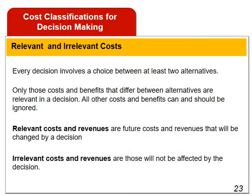Every decision involves a choice between at least two alternatives. The goal is to identify costs that are either relevant or irrelevant to the decision. Costs and benefits that differ between alternatives are relevant; all others are irrelevant and should be ignored. Relevant costs and revenues are future costs and revenues that will be changed by a decision. For example, if choosing between your own car or public transport for a journey, car tax and insurance costs are irrelevant since they remain the same either way, but petrol costs will differ and are therefore relevant for decision making.